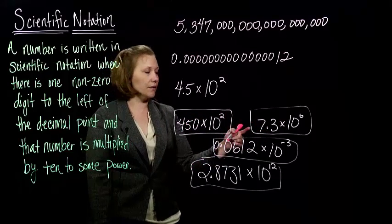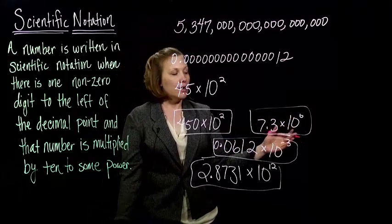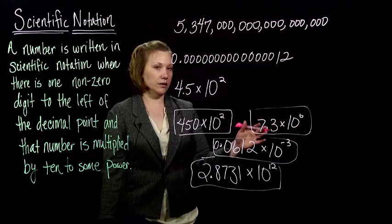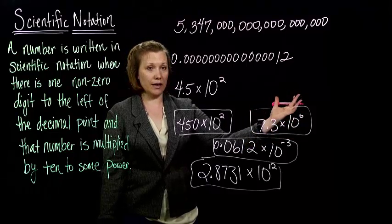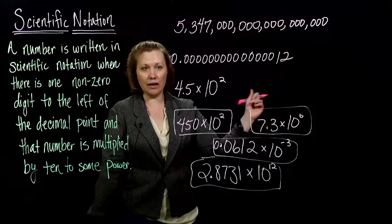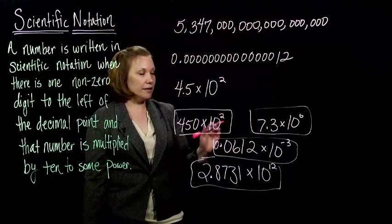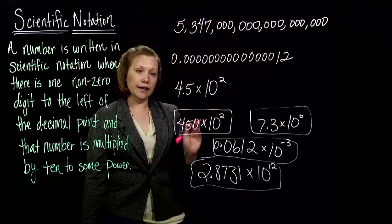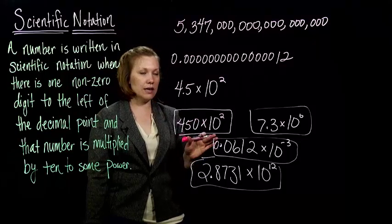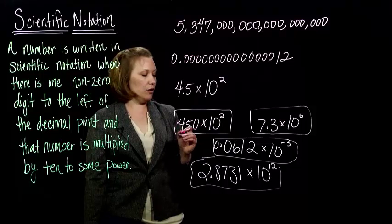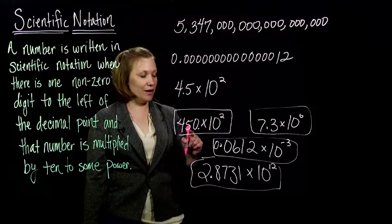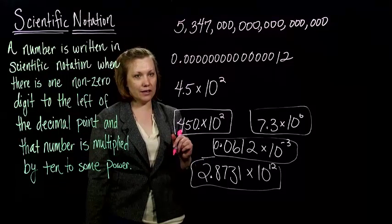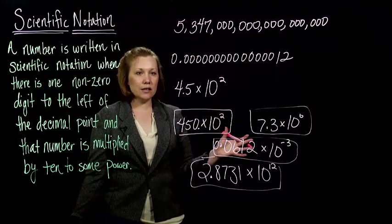This one actually is written in scientific notation: 7.3 times 10 to the zero. We've got one non-zero digit in front of the decimal point, and we have 10 raised to a power — even though it's the zero power, that's okay. And this last one, the first one I wrote — 450 times 10 squared — is not in scientific notation. There's more than one digit in front of the decimal point. We'd have to just have the 4 for this to be in scientific notation. So that's what scientific notation is.